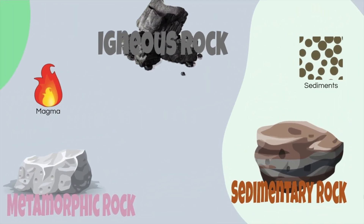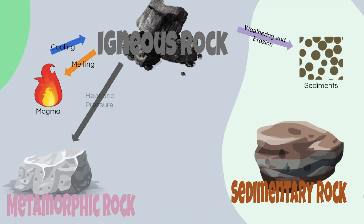Now let's go through the rock cycle — igneous rock, metamorphic rock, and sedimentary rock. First off, when magma cools, it forms igneous rock. When igneous rock melts, it forms magma. When igneous rock goes through weathering and erosion, those rocks are broken into smaller particles that we call sediments. If igneous rocks go under heat, a change in temperature and pressure — it's squished — it can become metamorphic rock. If metamorphic rock melts, it becomes magma again. Are you following this rock cycle?